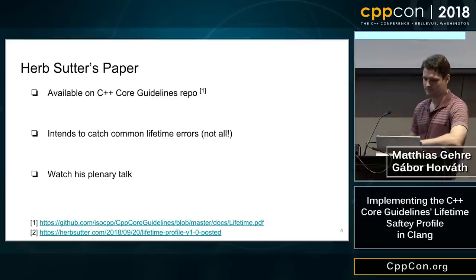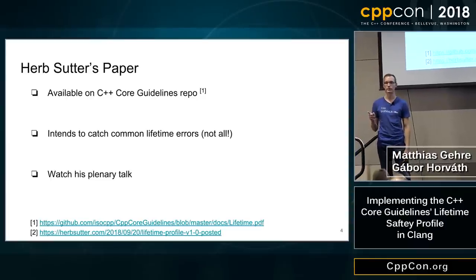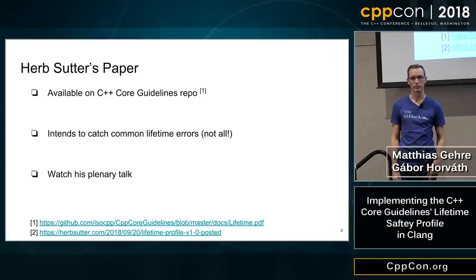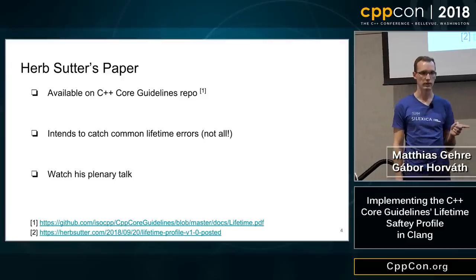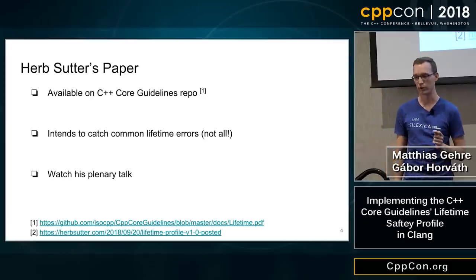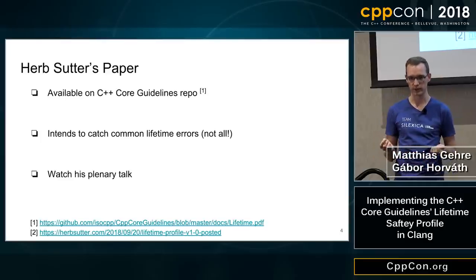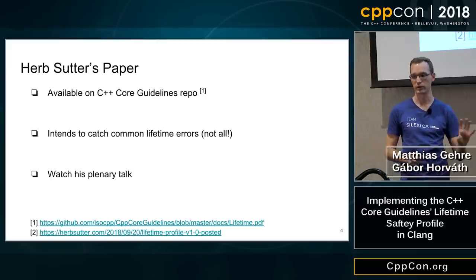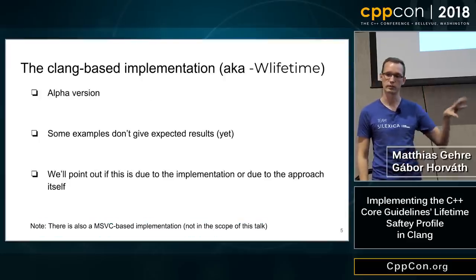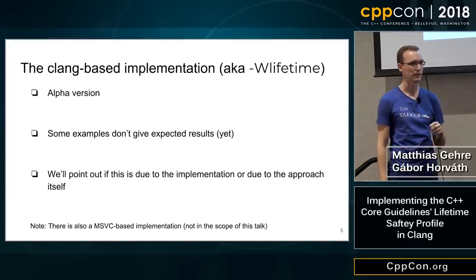Let's start with paper versus implementation. The paper has been uploaded roughly a week ago on the C++ core guidelines. There was a draft paper three years ago that Herb spoke about at CPPCON 2015, and one week ago he uploaded version 1.0. It tries to find the most common sources of dangling and diagnose them — it's not catching all possible bugs. Watch the plenary talk if you haven't, and also Jason Turner's talk about surprise and object lifetime.